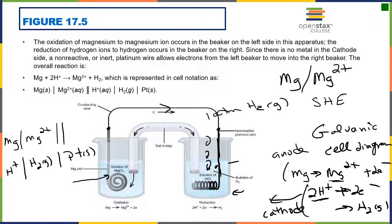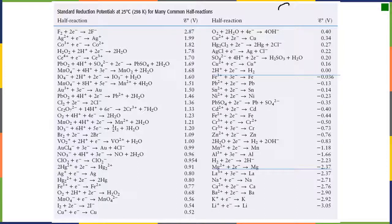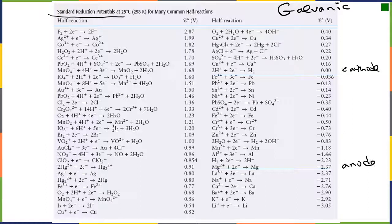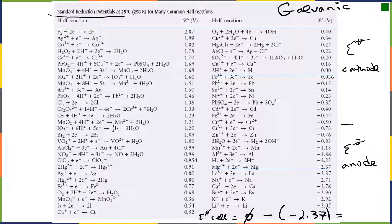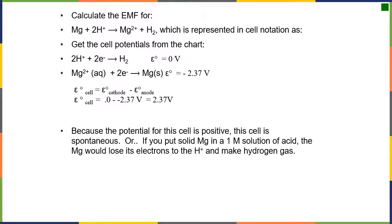Now let's calculate the cell potential for this reaction. For a galvanic reaction — which is spontaneous — you go down your standard cell reduction potentials. The first reaction you find is designated as your cathode, and the second is your anode. To get the cell potential, you take E-naught at the cathode minus E-naught at the anode. For this reaction, E-naught of the cell equals zero minus negative 2.37, giving a positive 2.37 volts. Magnesium readily dissolves in strong acid — one molar acid — with a very positive potential.